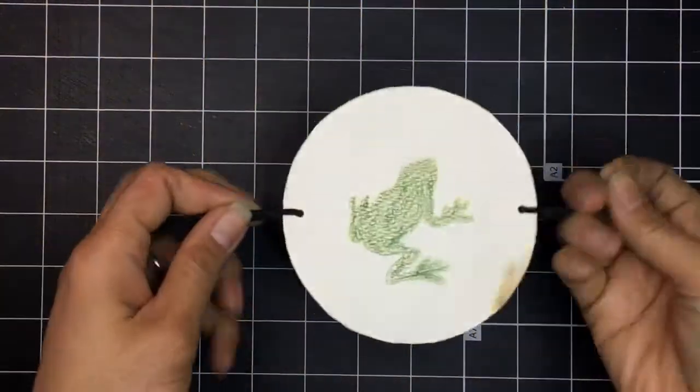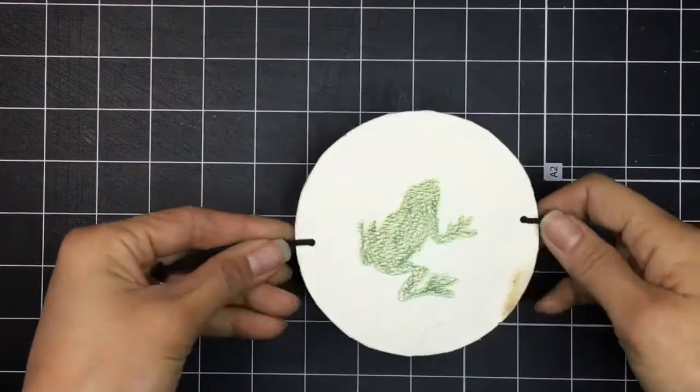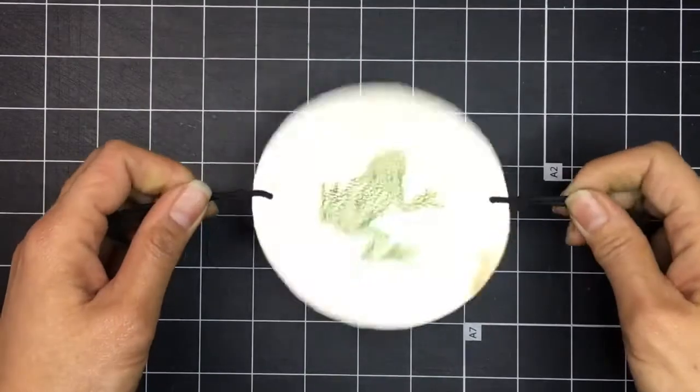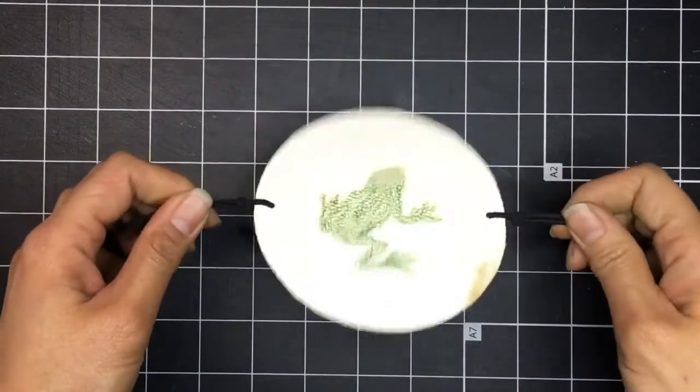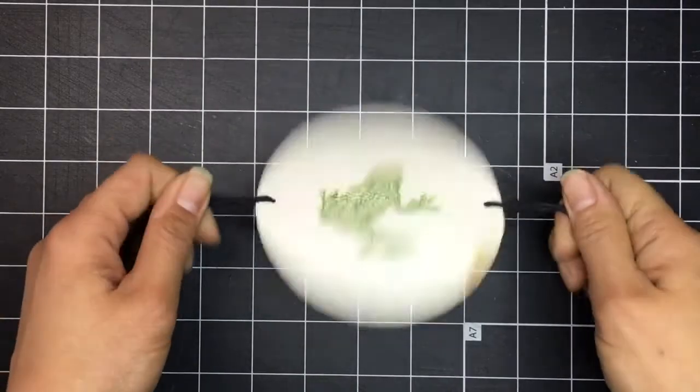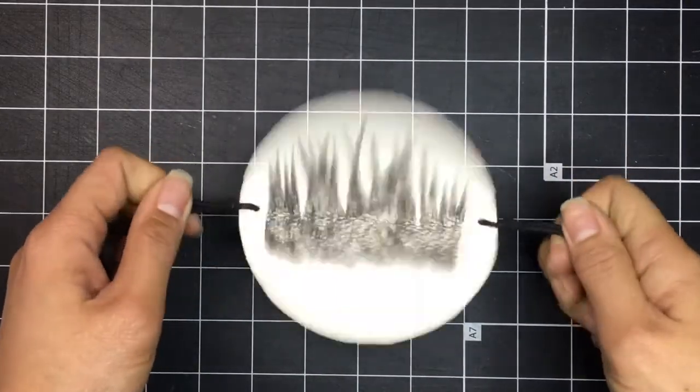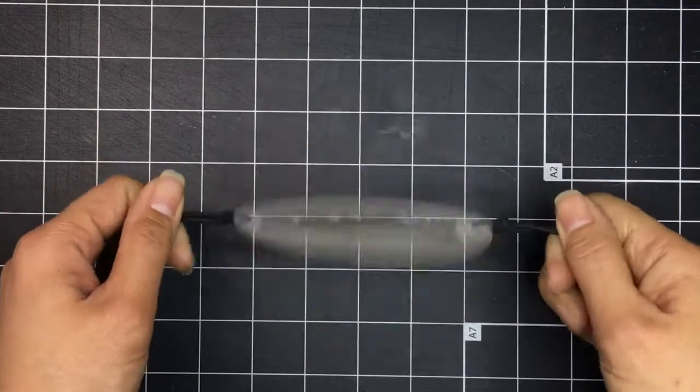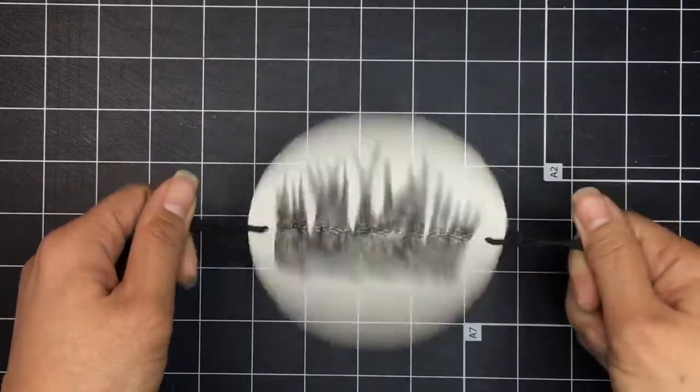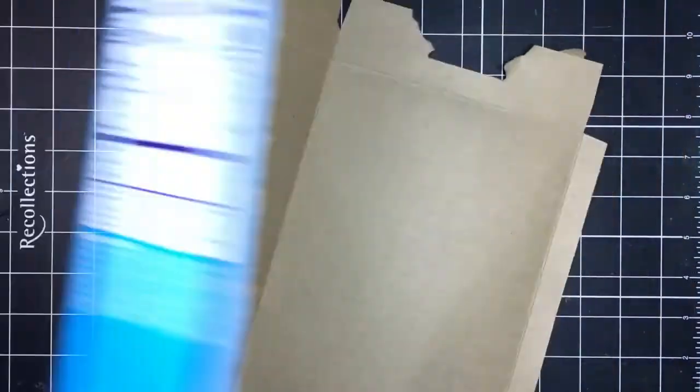I made this thaumatrope with my kids a long time ago after visiting the Museum of the Moving Image in Astoria, Queens. It's a frog hiding in the grass. Let's make a ladybug thaumatrope. We're going to upcycle a cardboard box. A brown one is okay to use, but try to find a white one in your recycle bin.